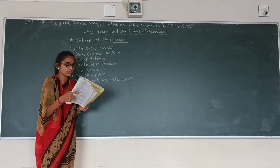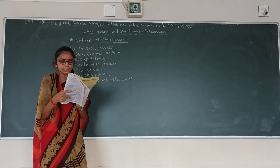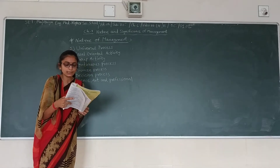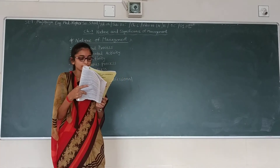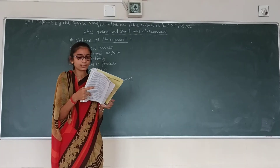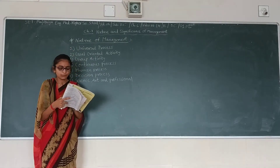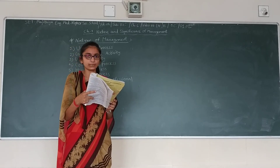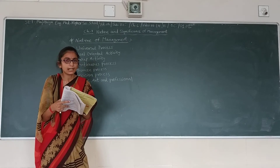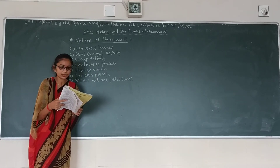Fourth is continuous process. Management is a continuous process. Once begun, it becomes difficult to discontinue. Management is goal-oriented, yet it does not stop after the achievement of objectives. New objectives and targets are defined by the business unit, and the cycle of defining objectives, achieving them, and redefining them continuously goes on.